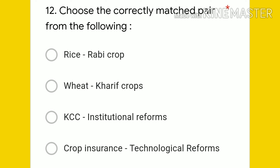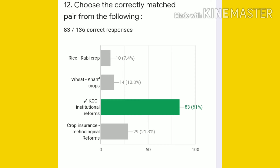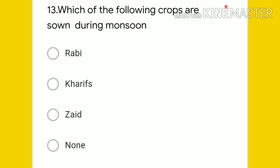Question 12: choose the correctly matched pair. Options include rice as rabi crops, wheat as kharif crops, KCC as institutional reforms, and crop insurance as technological reforms. The right answer is KCC under institutional reforms. 83 students gave the right answer — 61 percent.